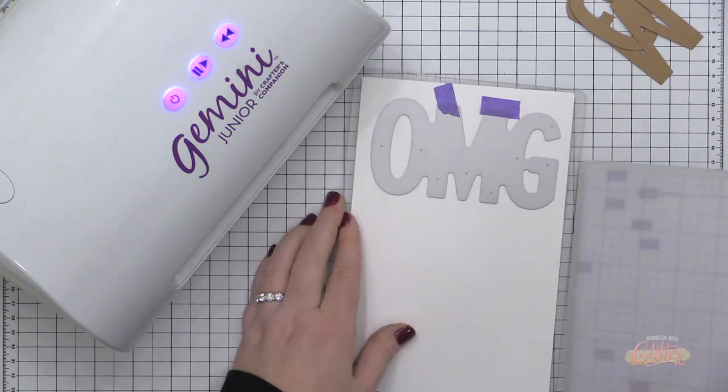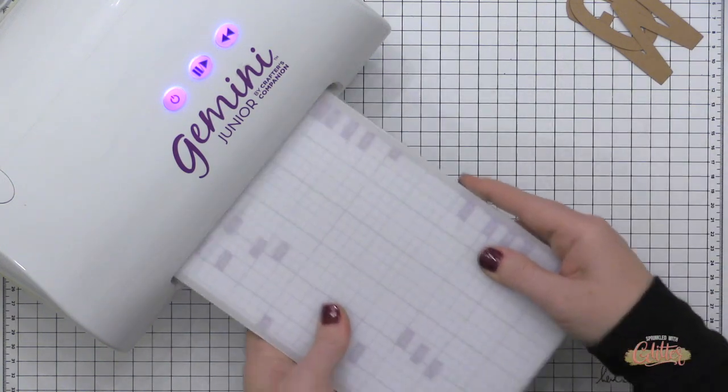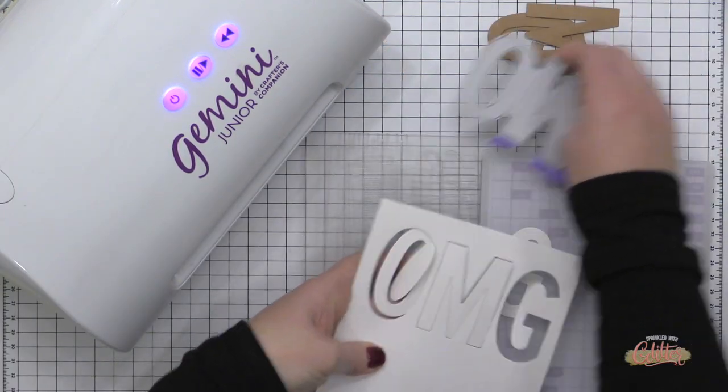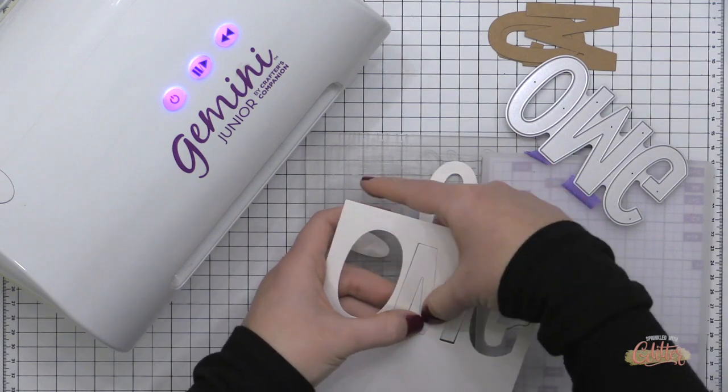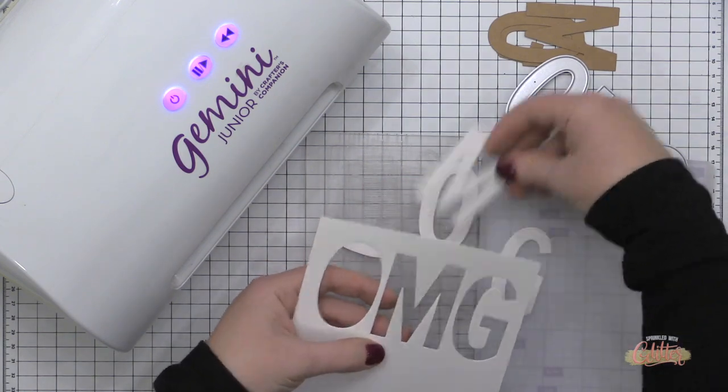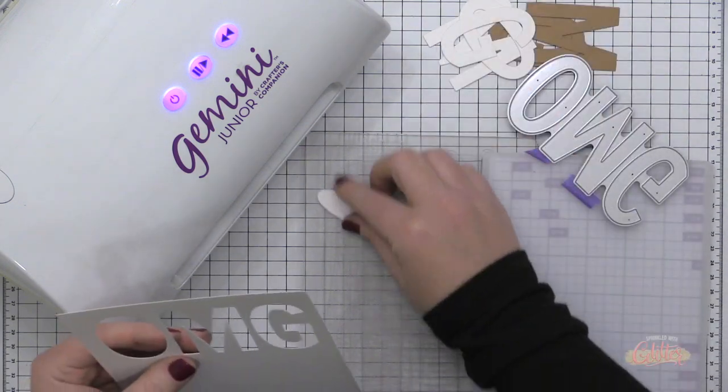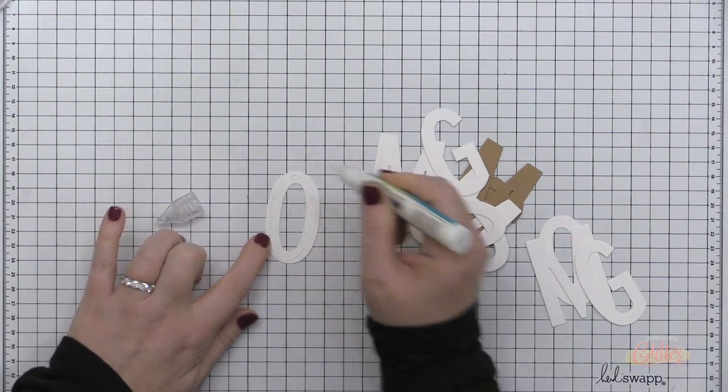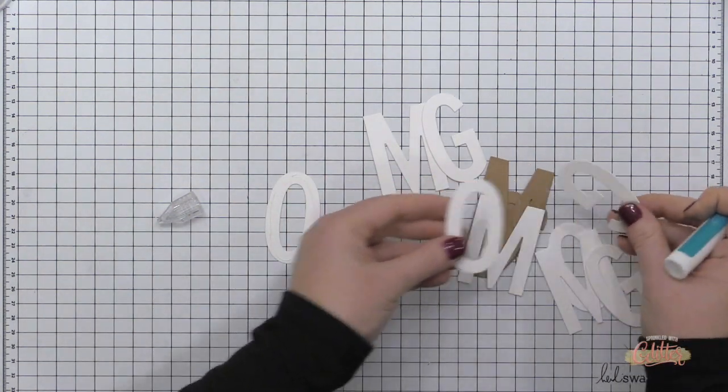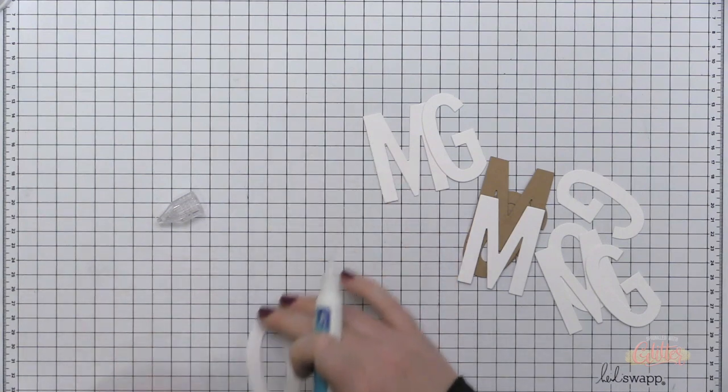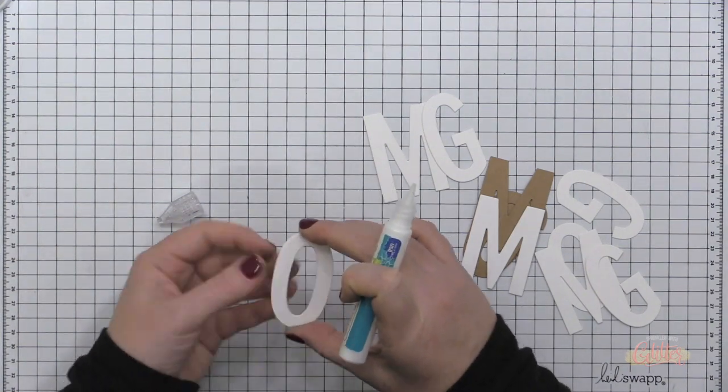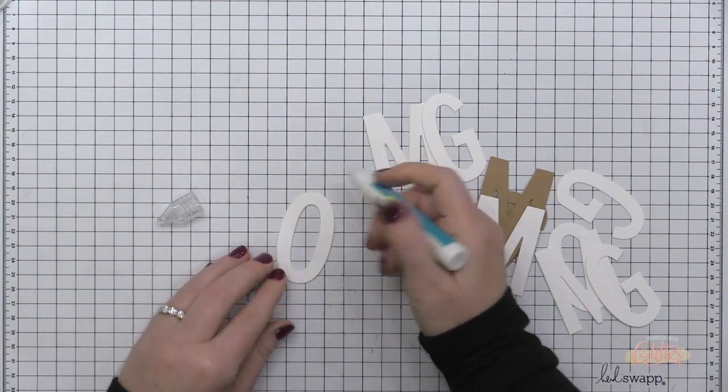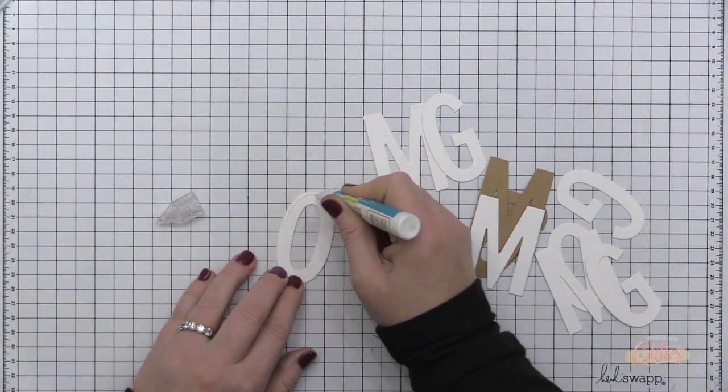Here, I've die cut the Mondo OMG from some craft cardstock. I've been kind of on a craft cardstock run lately, I'm really enjoying it and I'm also going to die cut it three times from some Neenah Solar White heavyweight cardstock. I wanted to build the layers up and kind of create a really dimensional background here using this OMG. So I am going to stack three of the heavyweight white cardstock die cuts up using some liquid adhesive and I'm going to top those off with the craft cardstock.